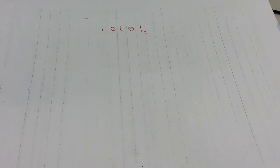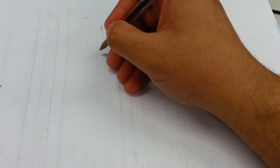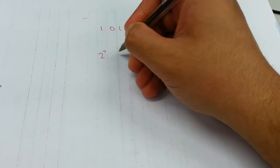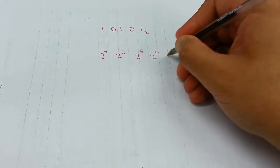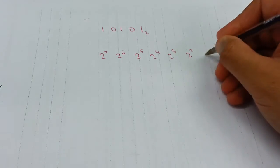After looking at your number, you need to write down the binary number and the list of the powers of two from right to left. So I can say 2 to the power of 7, 2 to the power of 6, 2 to the power of 5, 2 to the power of 4, 2 to the power of 3, 2 to the power of 2, and 2 to the power of 1.